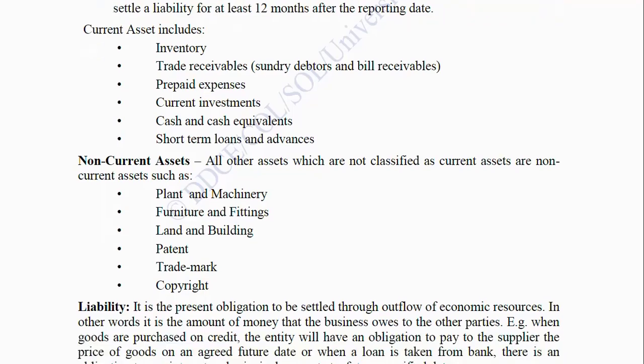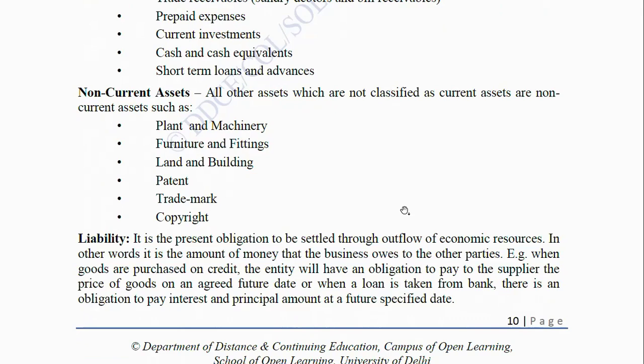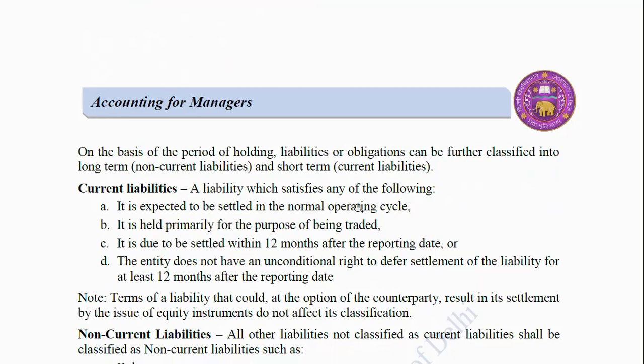Liability: It is the present obligation to be settled through outflow of economic resources. In other words, it is the amount of money that the business owes to other parties. For example, when goods are purchased on credit, the entity will have an obligation to pay the supplier on an agreed future date; or when a loan is taken from a bank, there is an obligation to pay interest and principal at a future specified date. On the basis of period of holding, liabilities can be further classified into long-term non-current liabilities and short-term current liabilities.